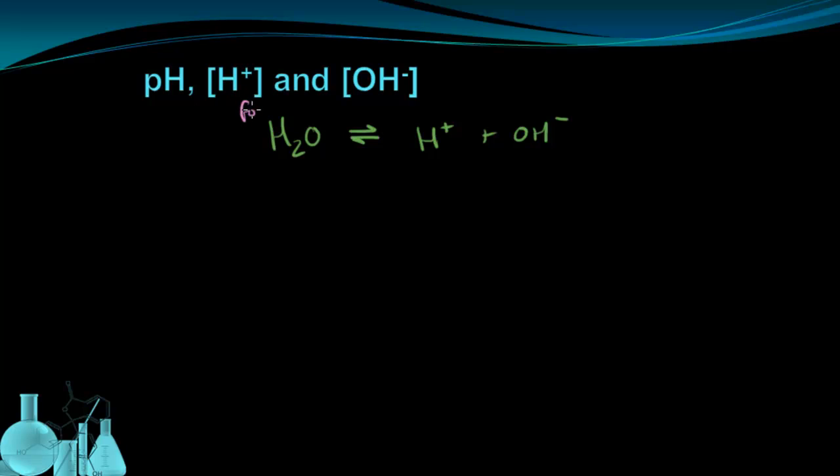We can also see that for every water molecule, I have one hydrogen ion and one hydroxide ion. So it's going to be impossible if I have pure water for the hydrogen ions to ever outnumber the hydroxide ions because they get made in a one-to-one ratio.